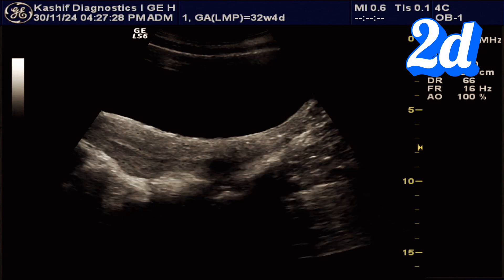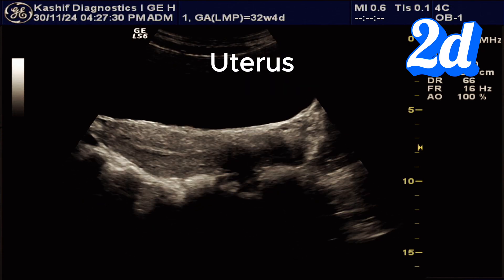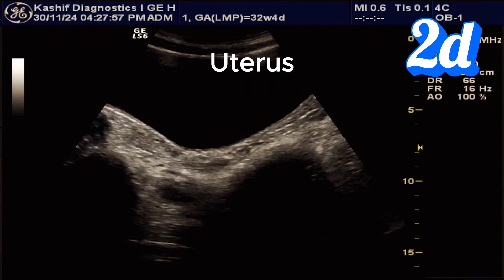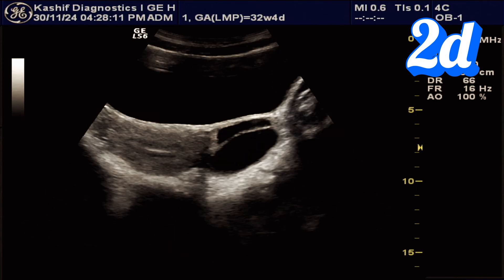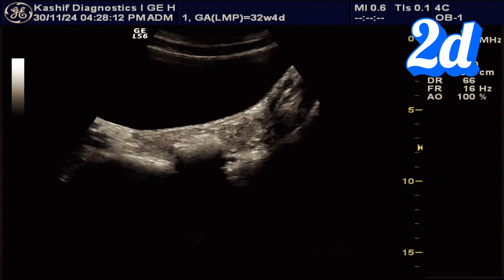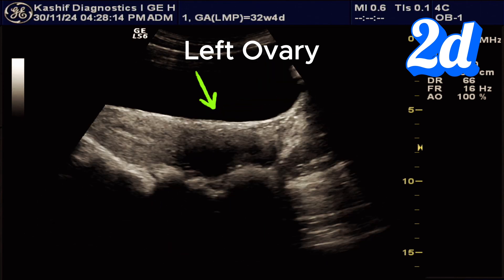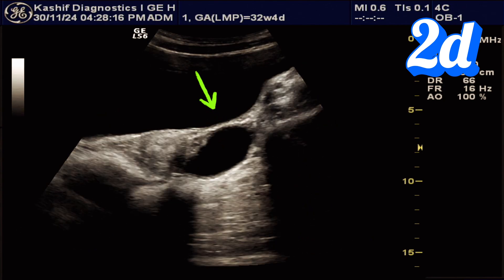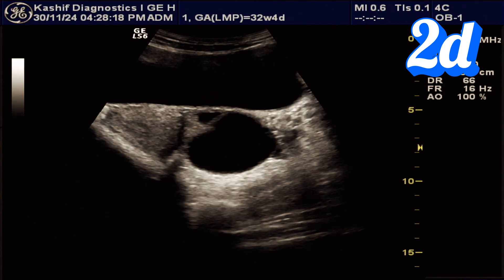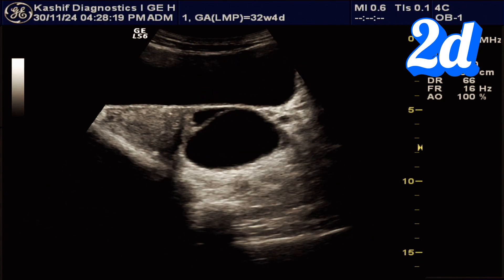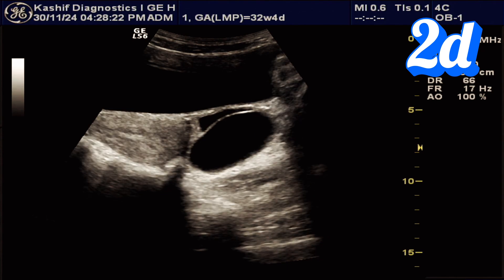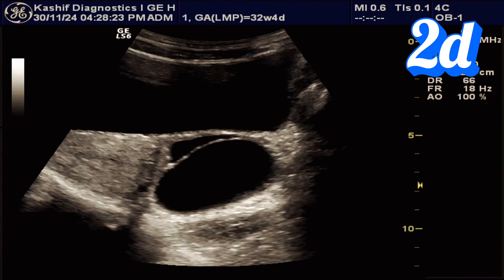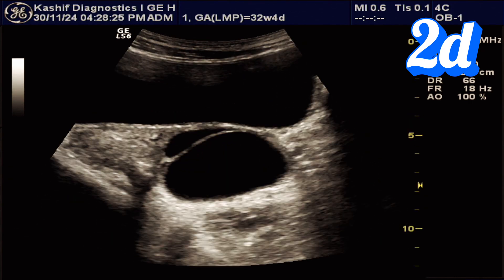Let's start with a standard 2D ultrasound scan. The uterus and right ovary appear normal. However, in the left ovary we find a well-defined cyst measuring 41 x 36 mm. The cyst has a smooth thin wall filled with clear fluid. There are no internal septa, no debris, and no solid component or calcifications.